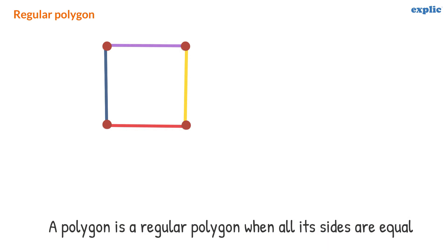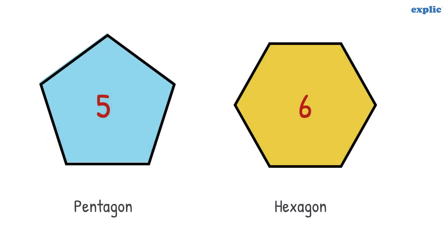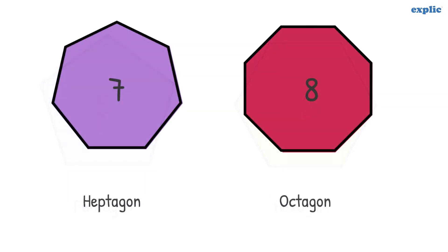A polygon is a regular polygon when all its sides are equal. Some important regular polygons are equilateral triangle, square, pentagon, hexagon, heptagon, and octagon.